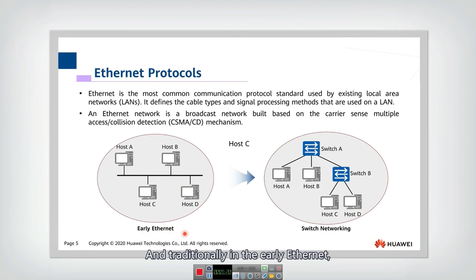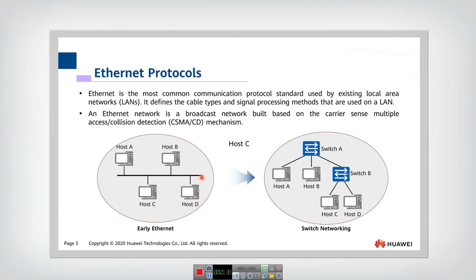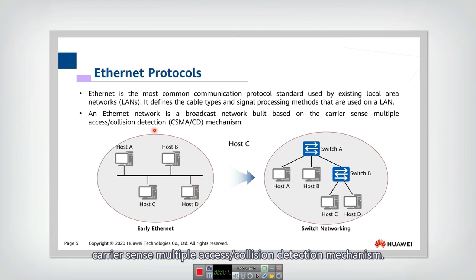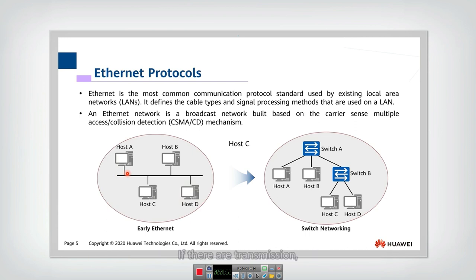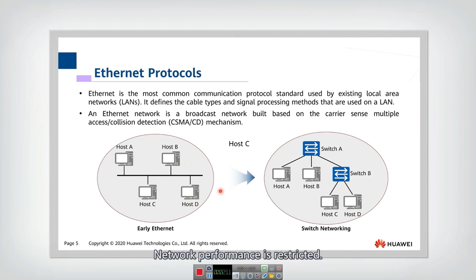Traditionally in early Ethernet, all the hosts are connected to the cable and they share the same broadcasting domain, which means that if you transmit a packet then all the other nodes can receive that packet. Traditional Ethernet works on the Carrier Sense Multiple Access Collision Detection mechanism. It means they will listen to transmissions of other hosts. If there is a transmission they will keep silent; if there is no transmission then they can transmit. So all these hosts cannot transmit simultaneously because they share the same broadcasting domain, and network performance is restricted.